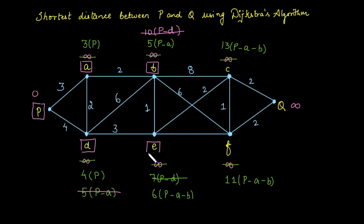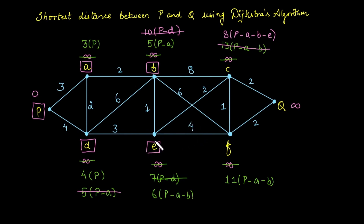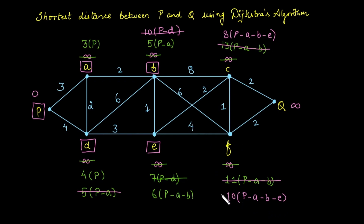Next, from the unvisited vertices, the minimum cost is at vertex E with cost 6, so we log vertex E. From E we can visit vertex C or F. Moving toward C, the cost is 6 plus 2, that is 8, via path P→A→B→E. Keep the minimum of 8. Over edge E to F, the cost is 4, so total is 6 plus 4, that is 10, via path P→A→B→E. The minimum for F is 10, so we discard 11 and follow path P→A→B→E→F with cost 10.